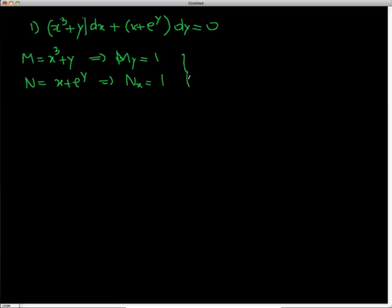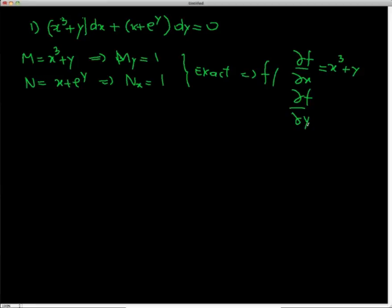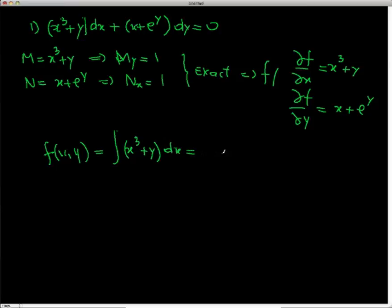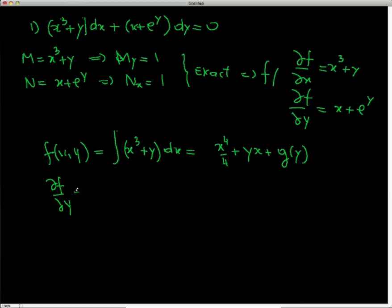I can find a function f such that df/dx = M = x³ + y and df/dy = N = x + eʸ. Integrating the first equation gives f(x,y) = x⁴/4 + yx + g(y), where y is treated as a constant with respect to x, and g(y) is an unknown function of y. Differentiating this result with respect to y gives x + g′(y).